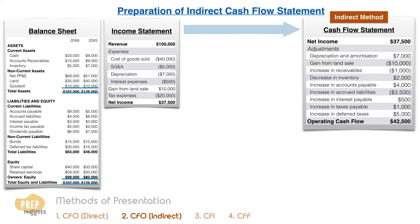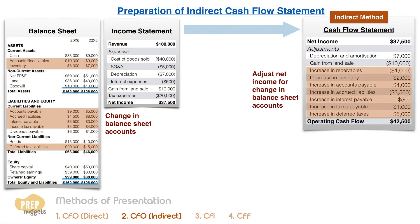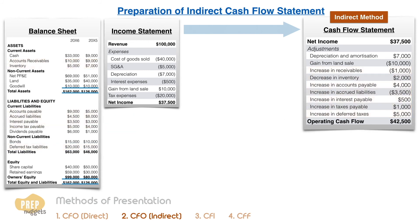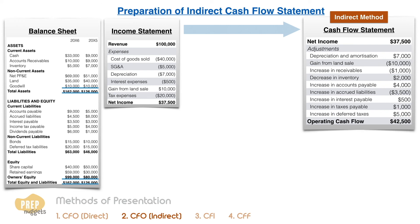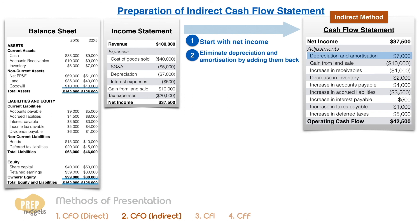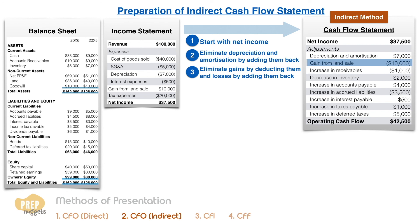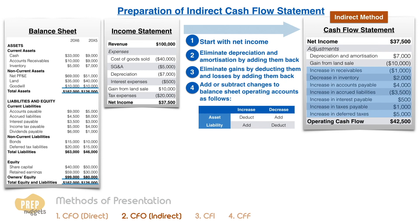Under the indirect method, we also need to adjust net income for changes in balance sheet accounts. A quick way to remember the polarities is to adjust for a decrease for assets and adjust for an increase for liabilities. In summary, the steps in calculating CFO under the indirect method are: Step 1, begin with net income; Step 2, eliminate depreciation and amortization by adding them back, as these are expenses where cash was not dispensed; Step 3, eliminate gains by deducting them and losses by adding them back, as these are CFI items, not CFO; Step 4, add or subtract changes to balance sheet operating accounts accordingly.